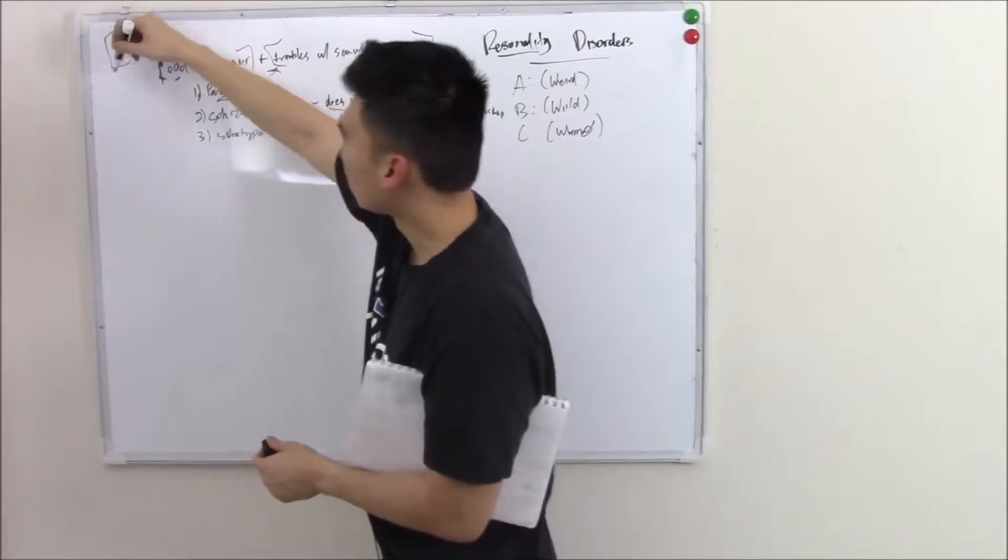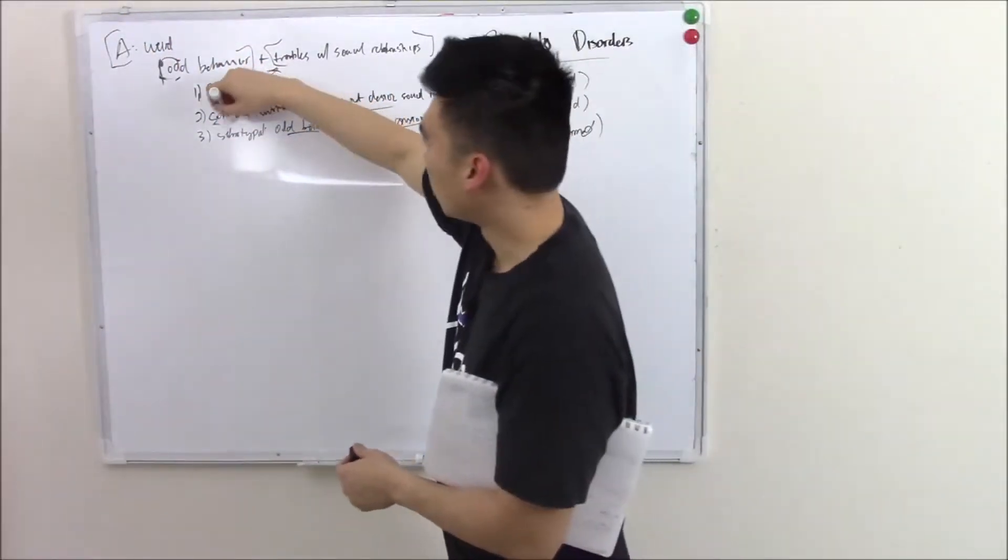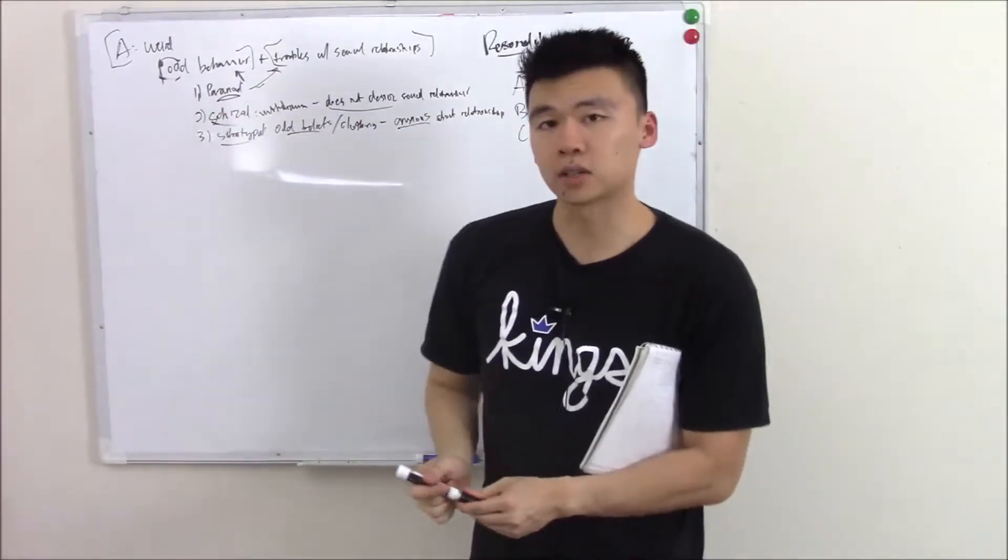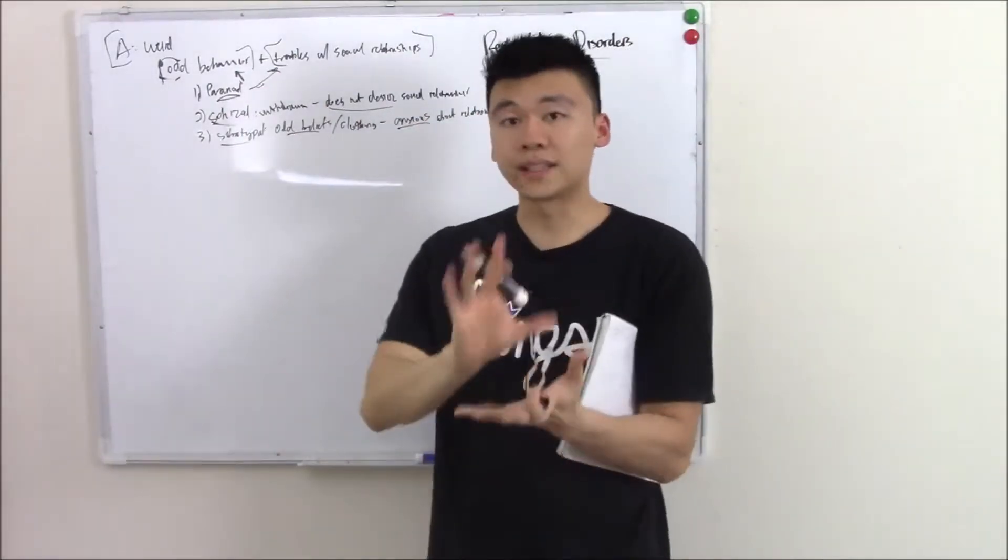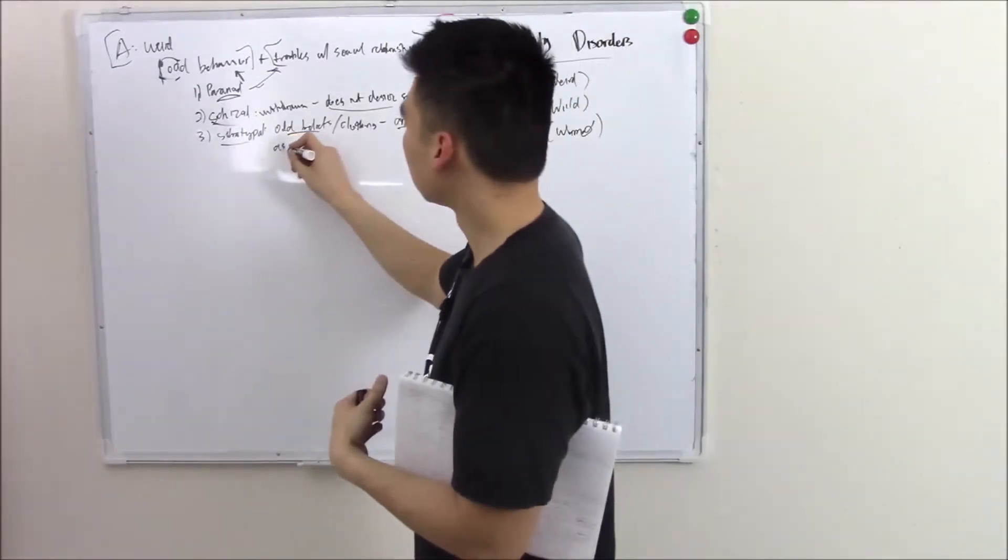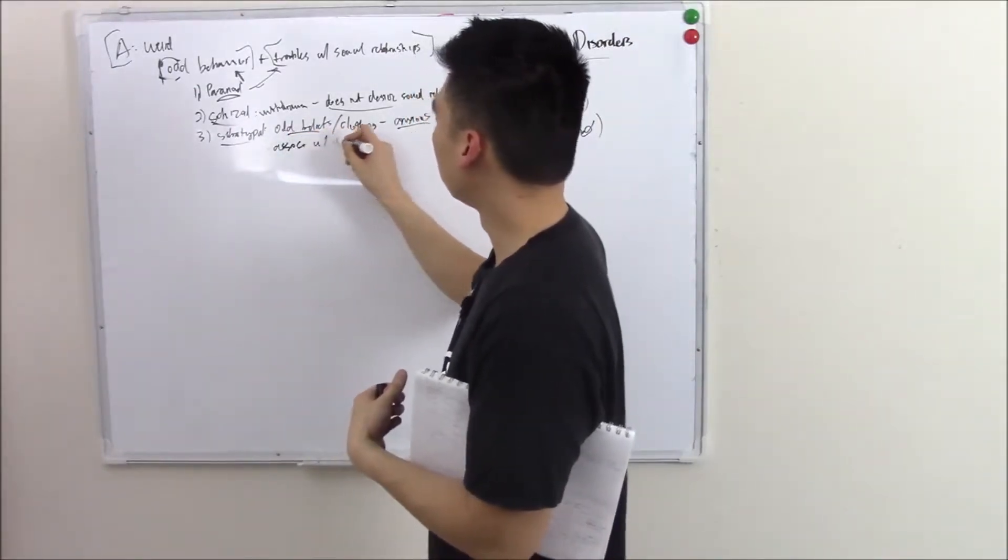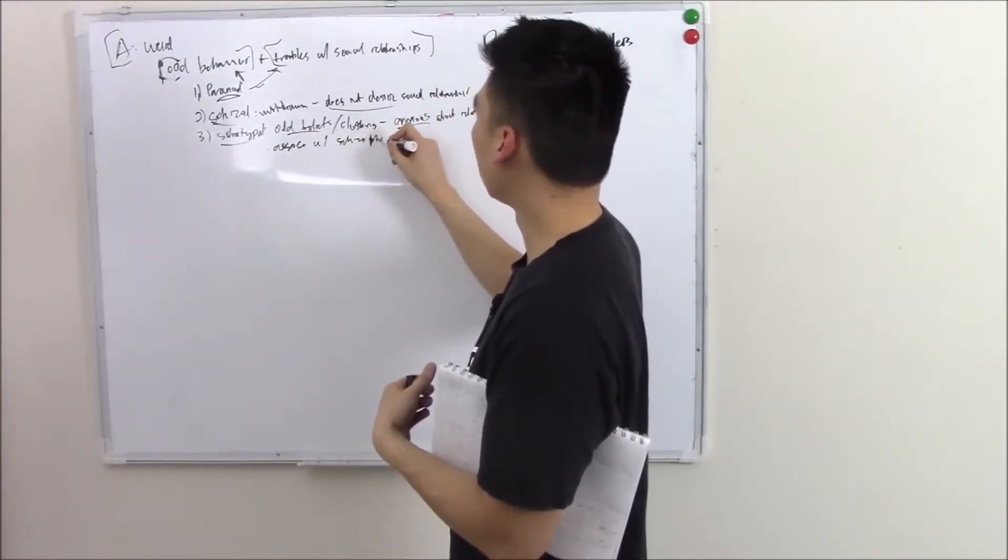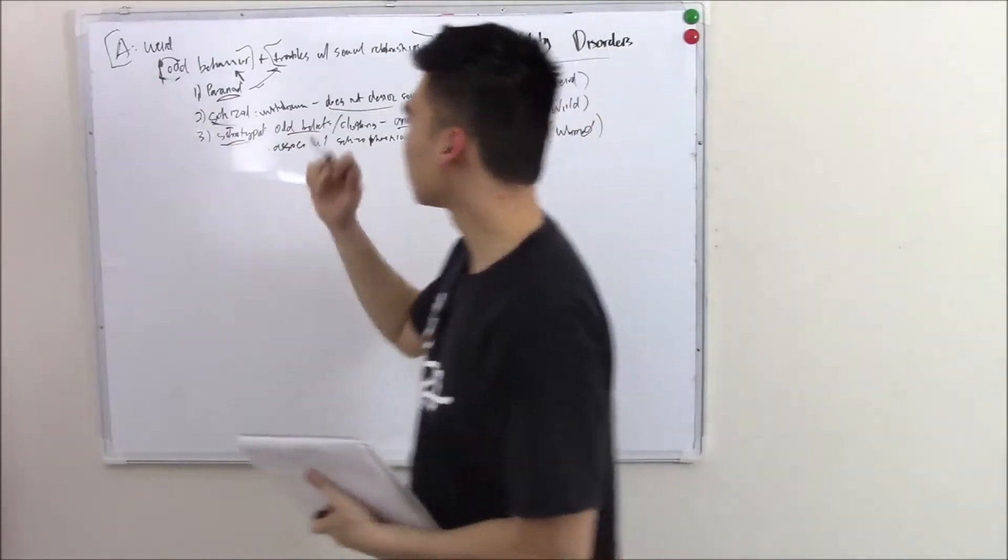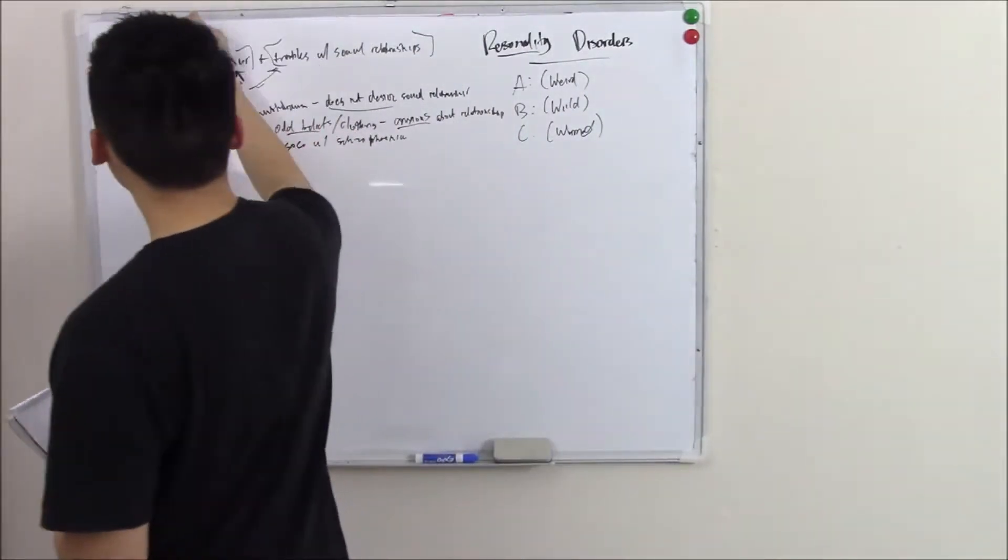Cluster A personality disorders are related to something. Can you take a guess what it is? It's related and associated with schizophrenia. None of them meet the criteria of schizophrenia but it's highly associated with it. And the name of many of these kind of give it away.